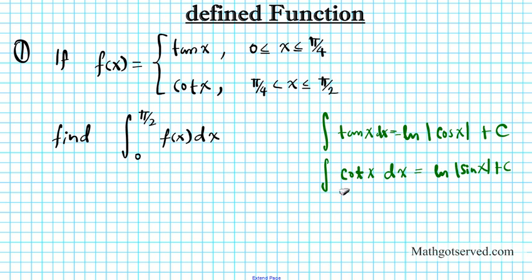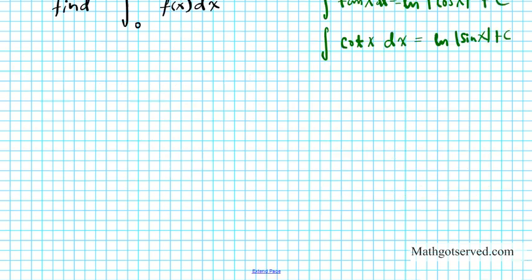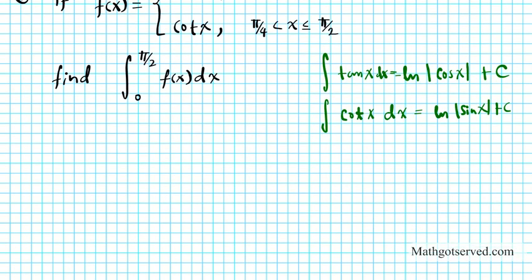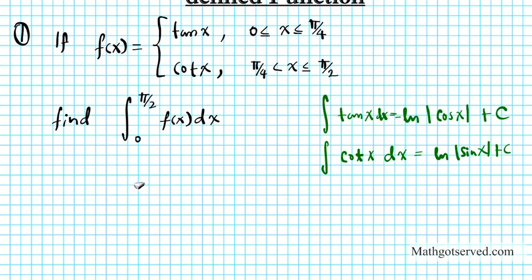Keep these formulas in mind — these are the formulas we're going to use. So how do we split up this piecewise defined function? Notice that pi over 4 is right at the center of pi over 2. So let's make a number line so we can delineate our functions. We're going from 0 all the way to pi over 2, and we know that pi over 4 is right there in the center.